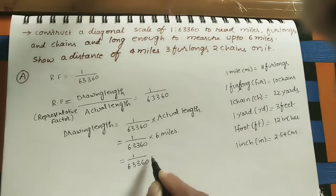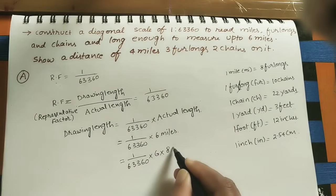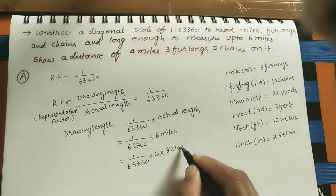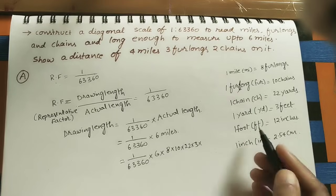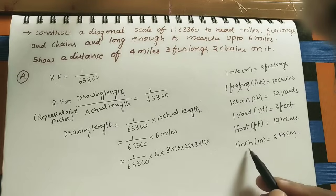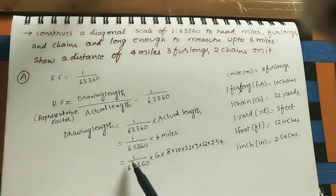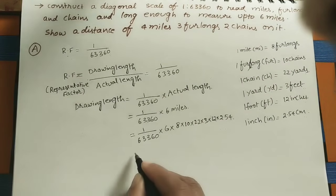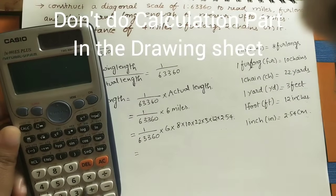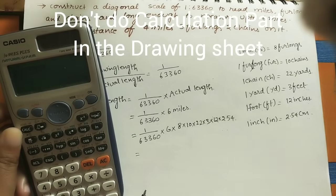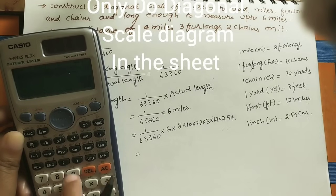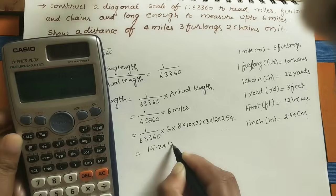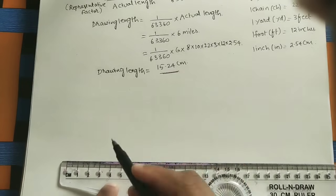Substituting: drawing length = (1/63,360) × 6 × 8 × 10 × 22 × 3 × 12 × 2.54. This gives 15.24 centimeters. So the drawing length is 15.24 cm. Mark the endpoints approximately 15.24 cm apart and join them.